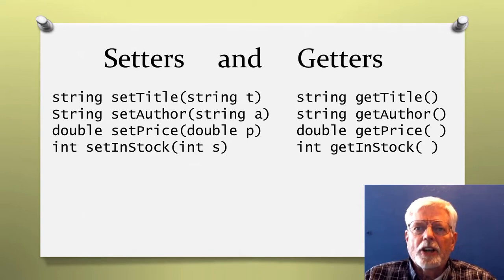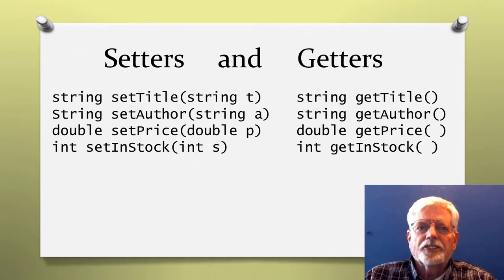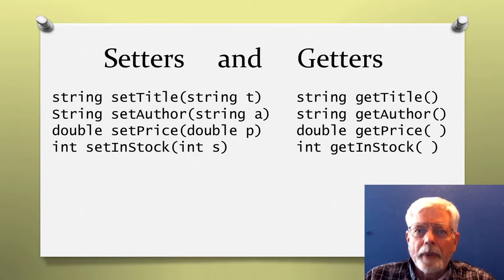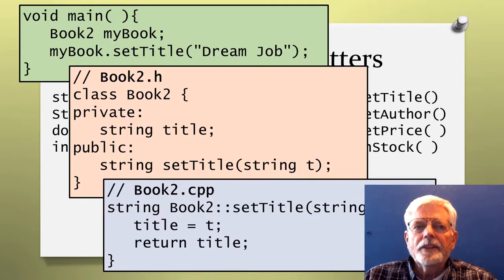Although any part of a program could instantiate a Book2 object, I am doing it in main for this example. For the purposes of the discussion, when I refer to main instantiating an object, it could be done anywhere. For each class's data members that I want to make available to main, I will provide a setter method for main to place data in the private variable and a getter method to retrieve the data.